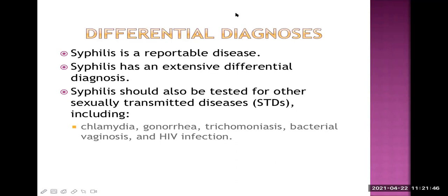Syphilis is a reportable disease. It has an extensive differential diagnosis because of its diverse presentation. If one sexually transmitted disease is present, others can also be considered as differential diagnoses, including chlamydia, gonorrhea, trichomoniasis caused by Trichomonas vaginalis, bacterial vaginosis, and HIV infection.